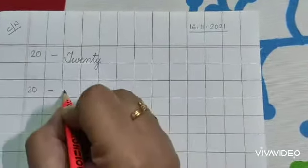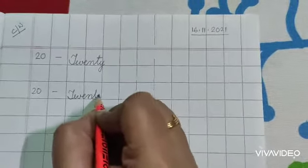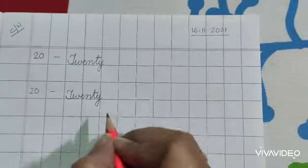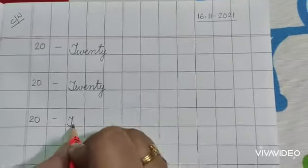Next, again T, W, E, N, T, Y, 20, 2, 0, 20.